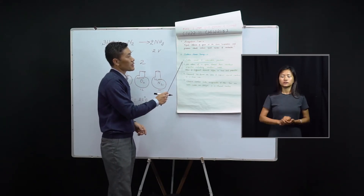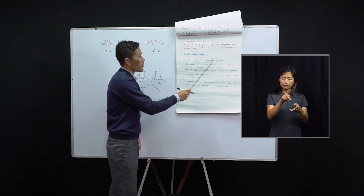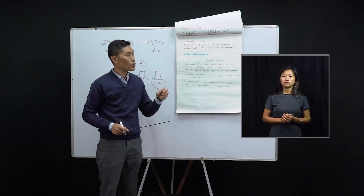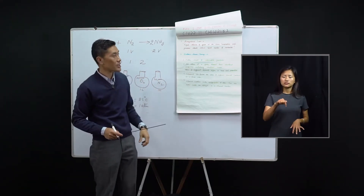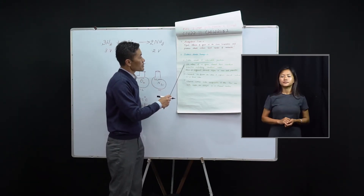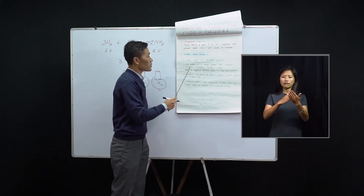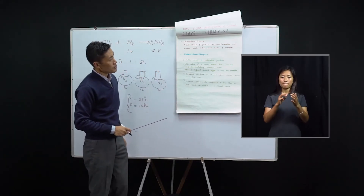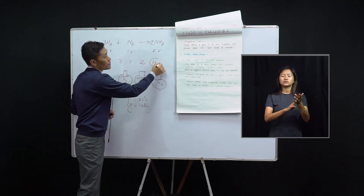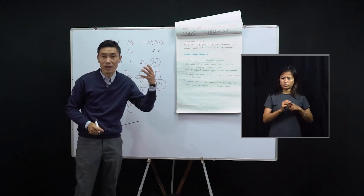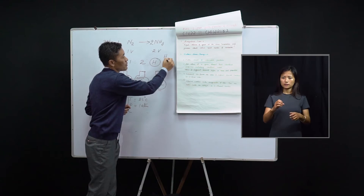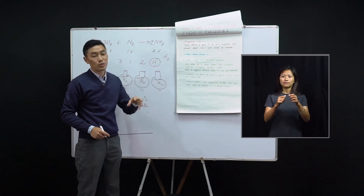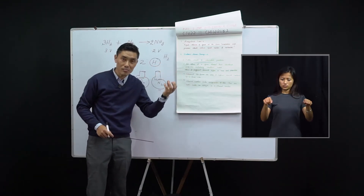The first postulate is that matter consists of indivisible particles. According to Dalton, matter is made up of very small particles which are indivisible, and these indivisible particles he called atoms. The second postulate: all atoms of a given element have identical properties, including identical mass, while atoms of different elements differ in mass and properties. If we take atoms of hydrogen, no matter where they are present — in a compound, as a molecule, or as an atom — all hydrogen atoms will be similar in properties and in mass.